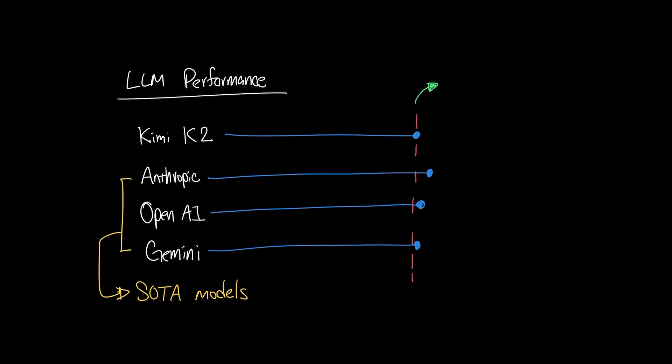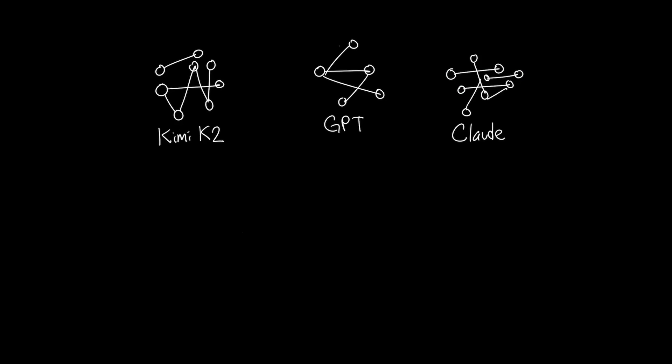So the obvious next question is how? How is it that Kimi K2 is able to perform so well against state-of-the-art models like Claude, GPT, and Gemini?